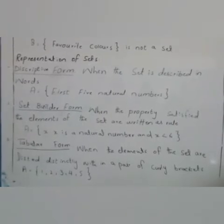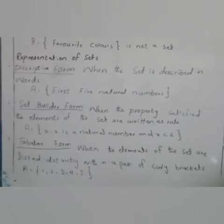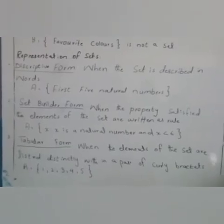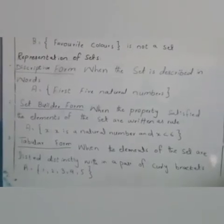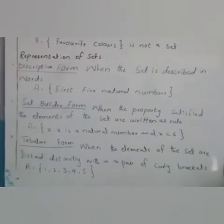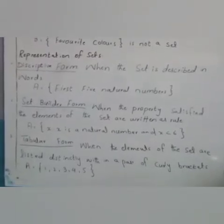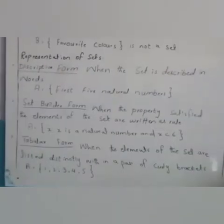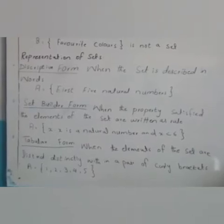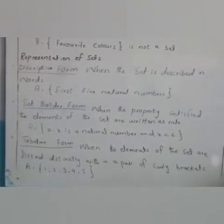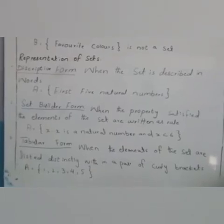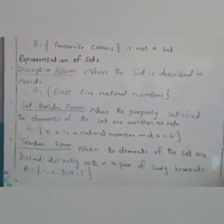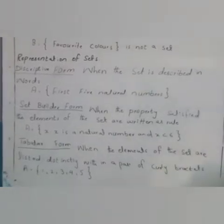Second, set builder form. When the property is satisfied by the elements of the set are written as a rule. For example, A is equal to X such that X is a natural number and X is less than 6. Here, X represents natural numbers which are less than 6. Number 3, tabular form. When the elements of the set are listed distinctly within a pair of curly brackets. For example, A is equal to 1, 2, 3, 4 and 5. When we set elements, comma, separate them, then they are set tabular form.